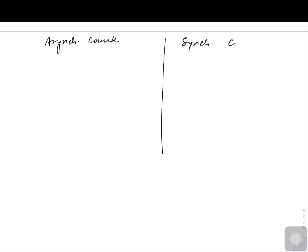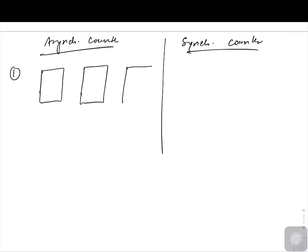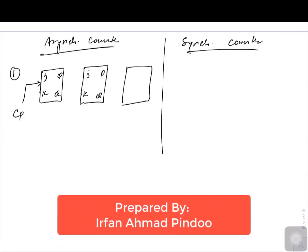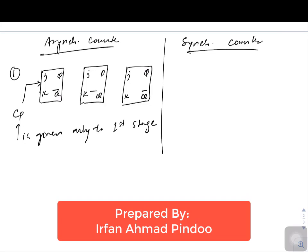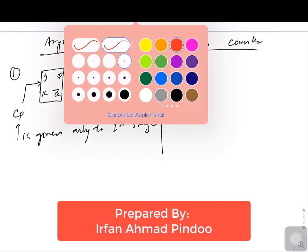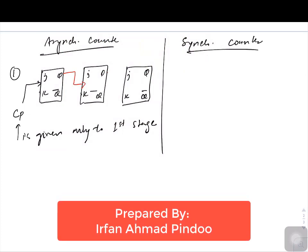Let us differentiate between an asynchronous counter and a synchronous counter. We can look at their circuit diagrams. In an asynchronous counter, if we look at the clock pulse, using JK flip-flops — the clock pulse is given only to the first stage. The clock pulse is given only to the first stage, while the output of the first stage acts as the clock for the next stage.